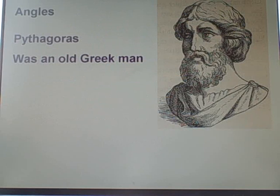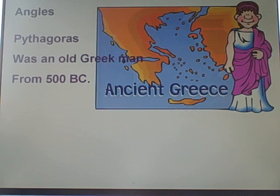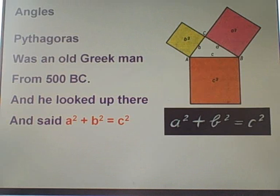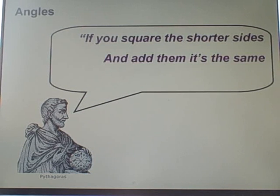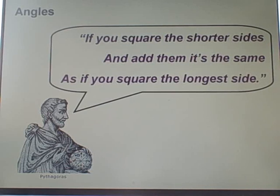Pythagoras was an old Greek man from 500 BC. And he said a squared plus b squared equals c squared. If you square the shorter sides and add them, it's the same as if you square the longest side.